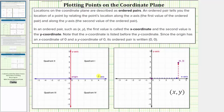As an example, let's look at the location of this point here. If we start at the origin, we would have to move right four units to positive four on the x-axis, which is the reason why the x-coordinate is positive four. Then from here, we have to move up three units in the direction of the positive y-axis, which is the reason why the y-coordinate is positive three. Notice how this point lines up with positive four on the x-axis and positive three on the y-axis. The ordered pair for this point is (4, 3).